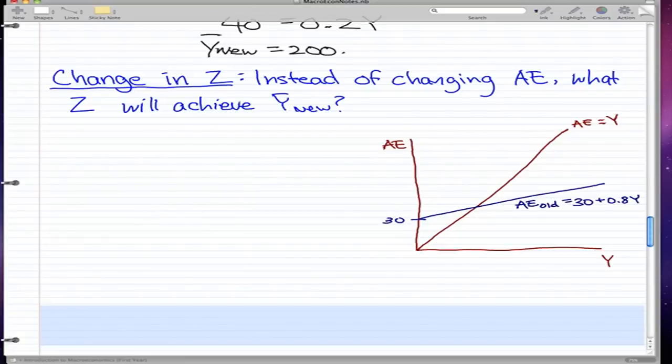Now, continuing from the last video, we talked about changes in equilibrium spending. Now, what do you think will happen if we have a change in the marginal propensity to spend, or as we prefer to use, Z? Instead of changing AE, what will changing Z achieve in Y new?